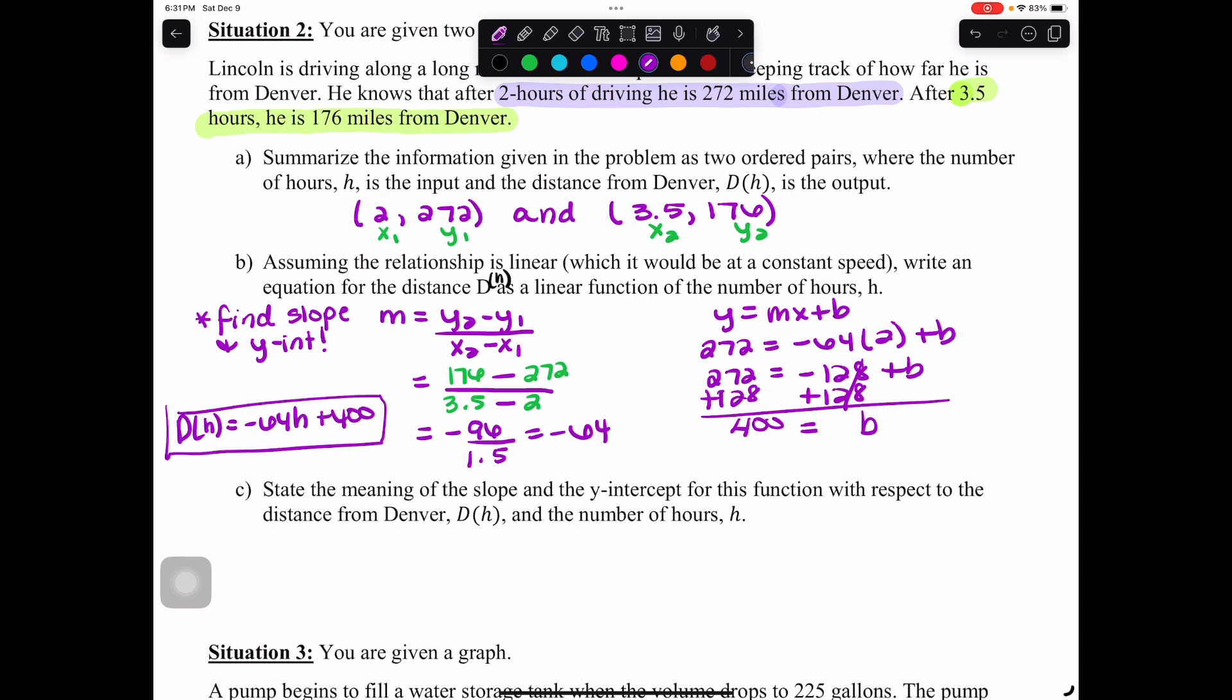Now we have everything that we would need to write our equation. D of h is equal to our slope, which is negative 64, times h, with a y-intercept of 400. This is our equation. Part c: state the meaning of the slope and the y-intercept for this function with respect to the distance from Denver and the number of hours. A lot of times in these real-world contexts, these numbers mean something. So we have to be able to describe what they mean.